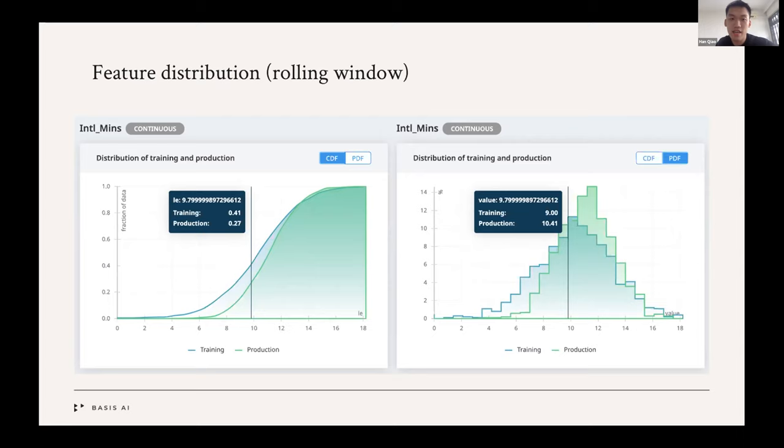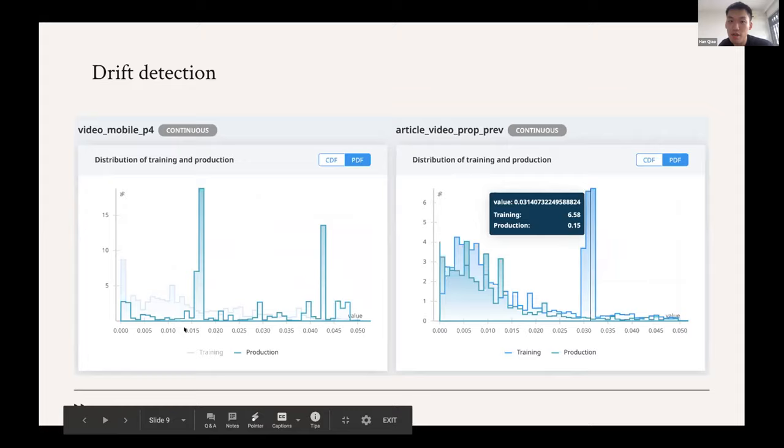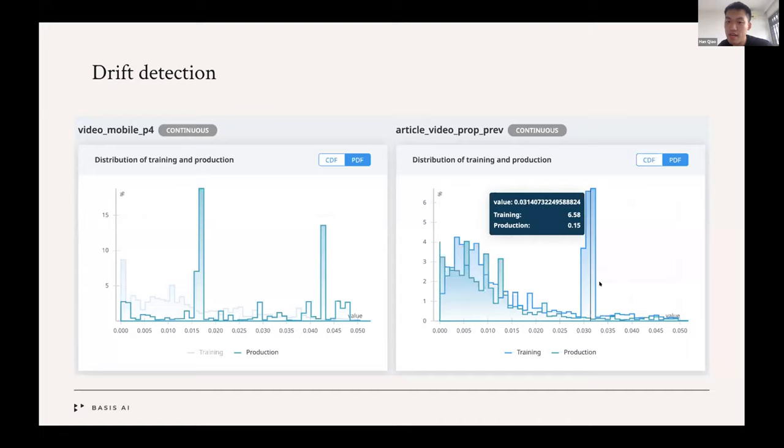So how does it look like when there are drifts? So in the graph on the left, we have two spikes in production distribution that were never observed in the training data. So this could indicate that a new pattern has emerged in your business data. So you might want to re-trigger a training. And in the graph on the right, we have the reverse. We have a spike in the training distribution that is absent from the production data. So this could mean that your training data might be outdated.